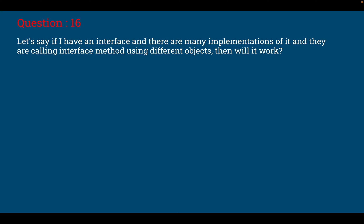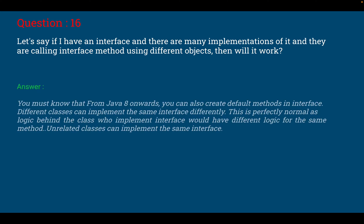Question number 16: if I have an interface and there are many implementations of it and they are calling interface methods using different objects, will it work? Yes. From Java 8 onwards you can also create default methods in an interface. The real answer is: different classes can implement the same interface differently, each with different logic. This is perfectly normal — unrelated classes can implement the same interface, each providing their own logic for the same method.